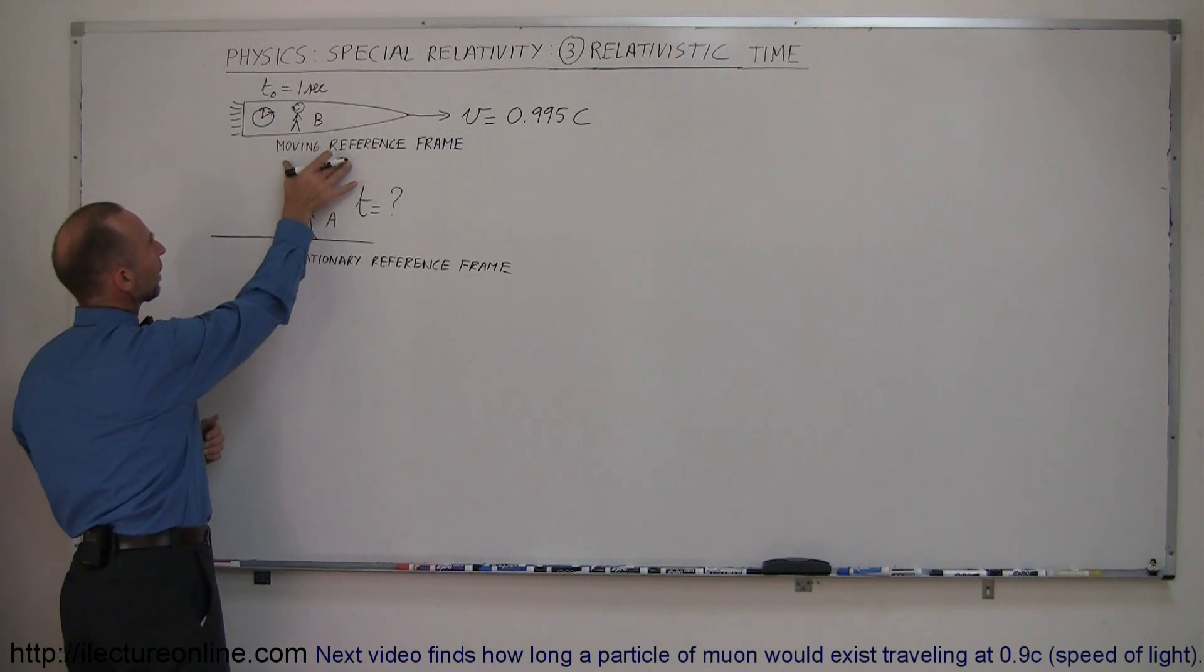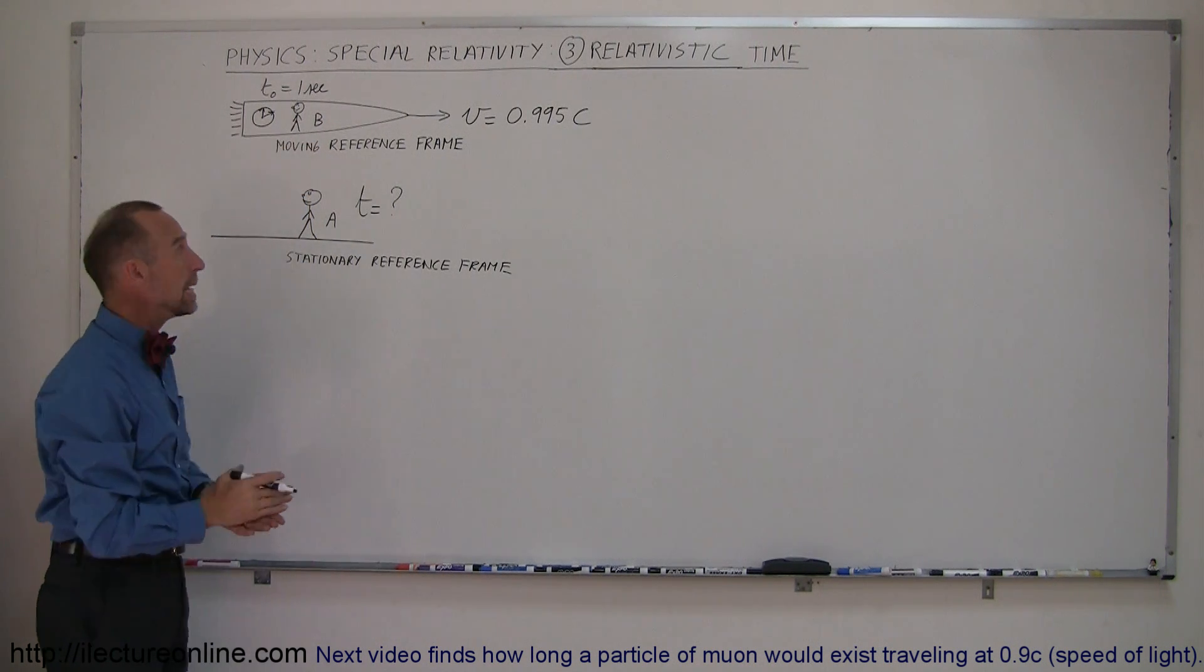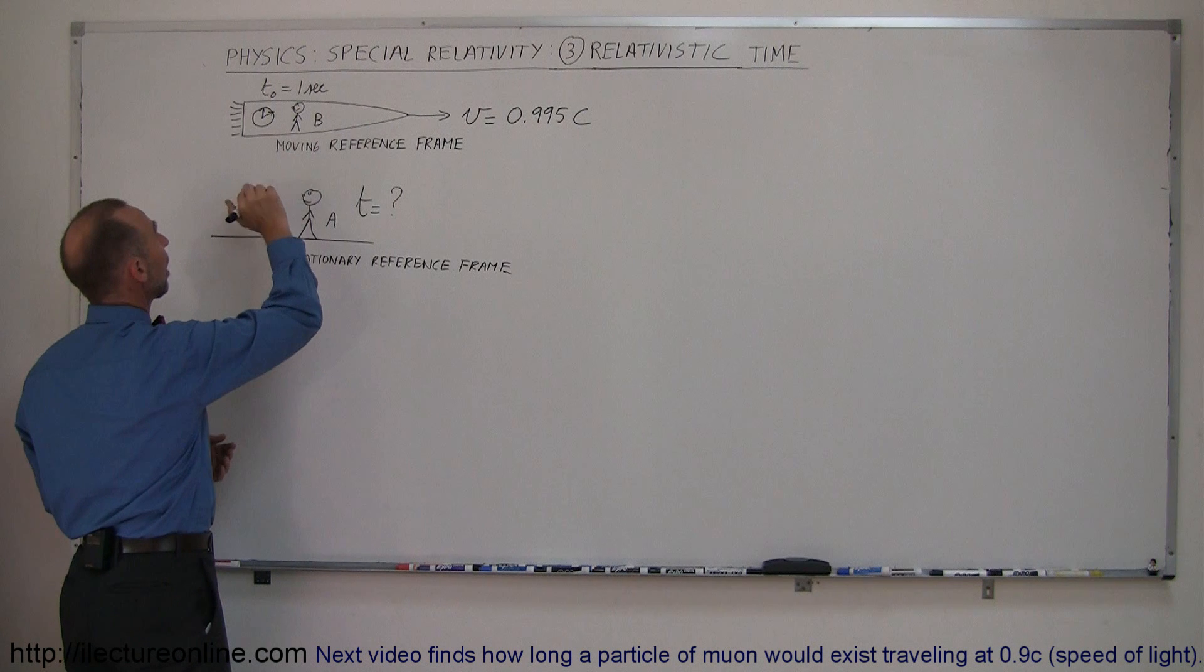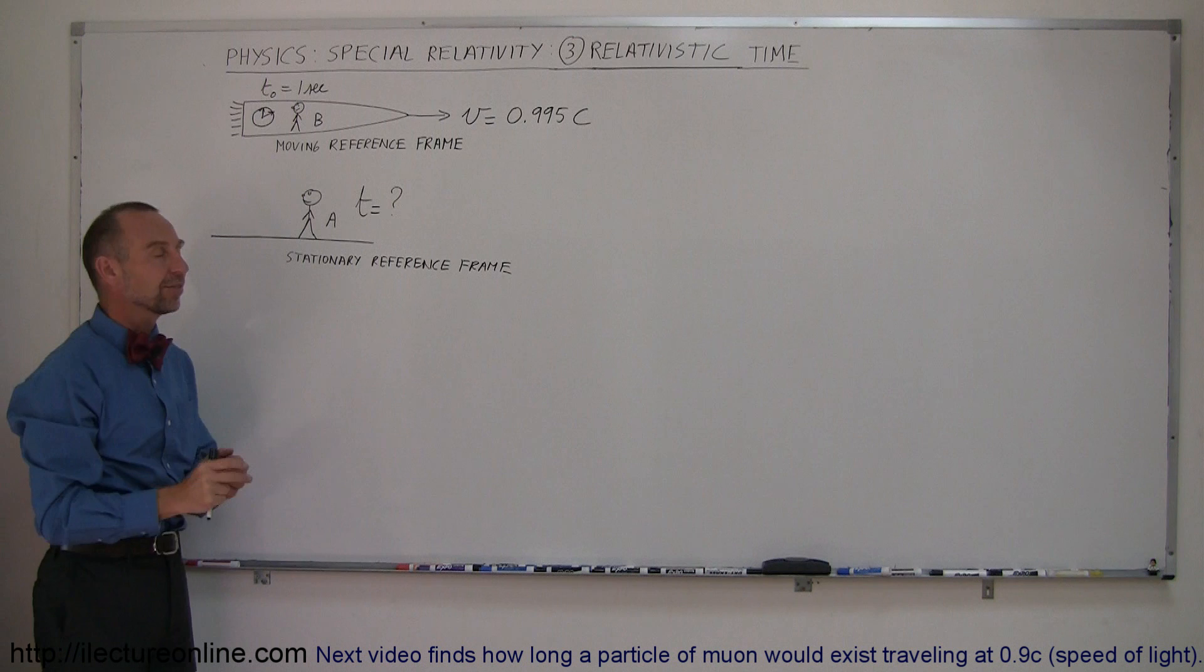That is our moving reference frame. On our moving reference frame, we have a clock and an observer. We'll call it Observer B, moving along with the clock. Observer B measures a time elapsed on that clock of one second.